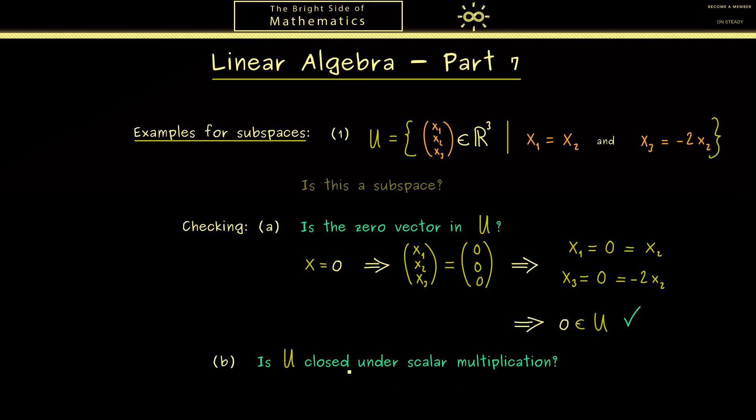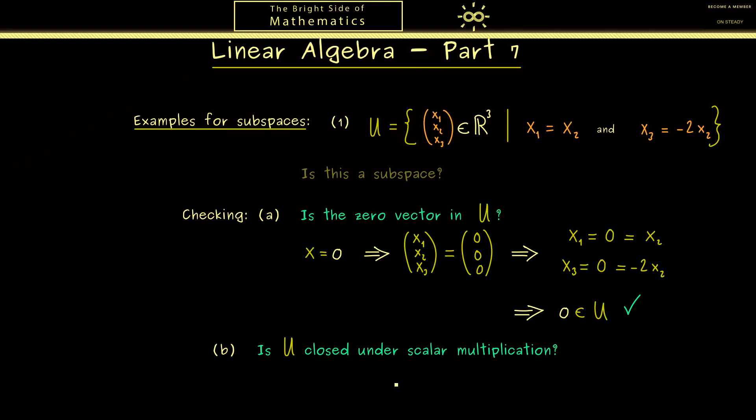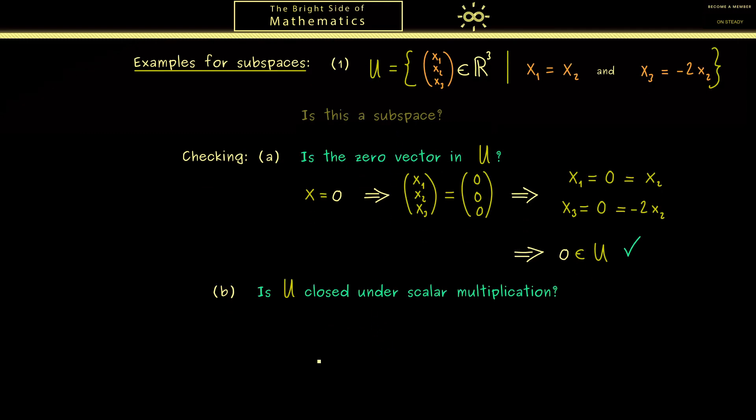In a rough way we can formulate the second question as: is U closed under scalar multiplication? So it shouldn't be possible to leave the set U just by scaling vectors. Therefore the starting point here is a vector in U and a scalar lambda. Please recall if we want to show this property we have to go with an arbitrary vector u in U and an arbitrary scalar lambda. Our vector u should have 3 components we can call u₁, u₂, u₃.